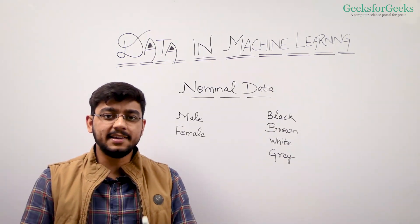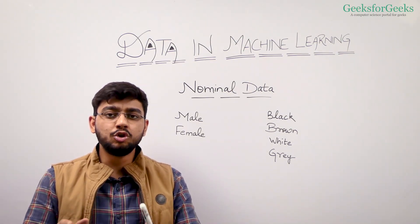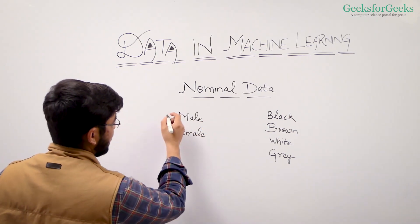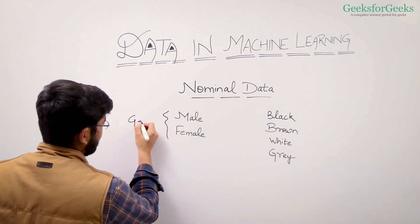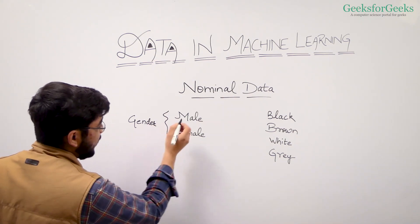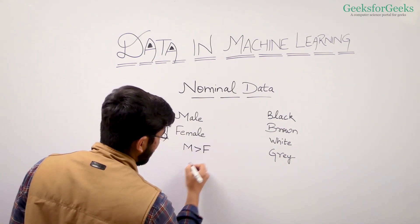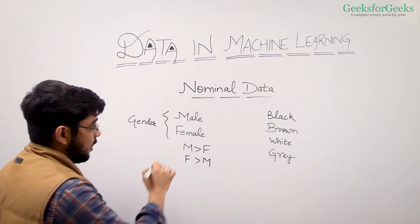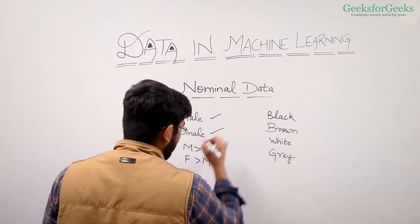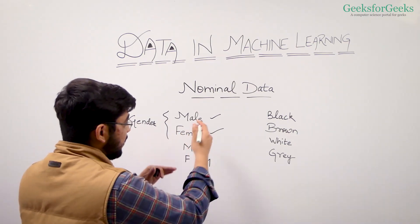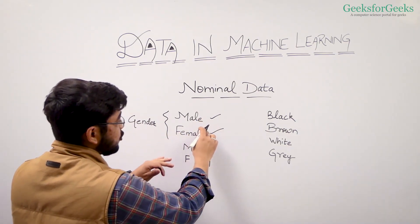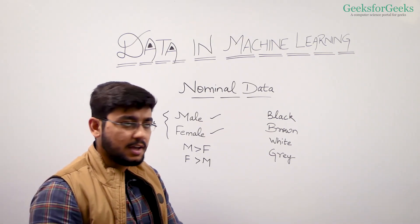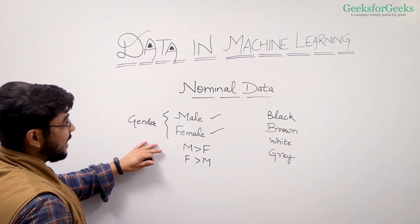Nominal data is categorical data with no numerical ordering. Let's take an example: male, female. These are gender. But we can't say that male is greater than female or female is greater than male. Since we have this data, but there is no ordering. These are just simple data labels. So we define them as nominal data.